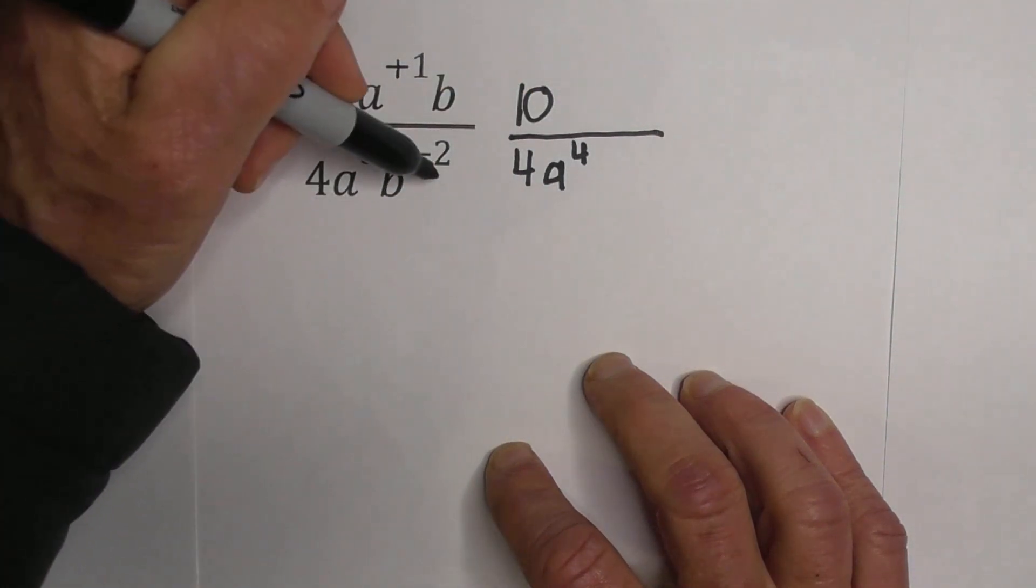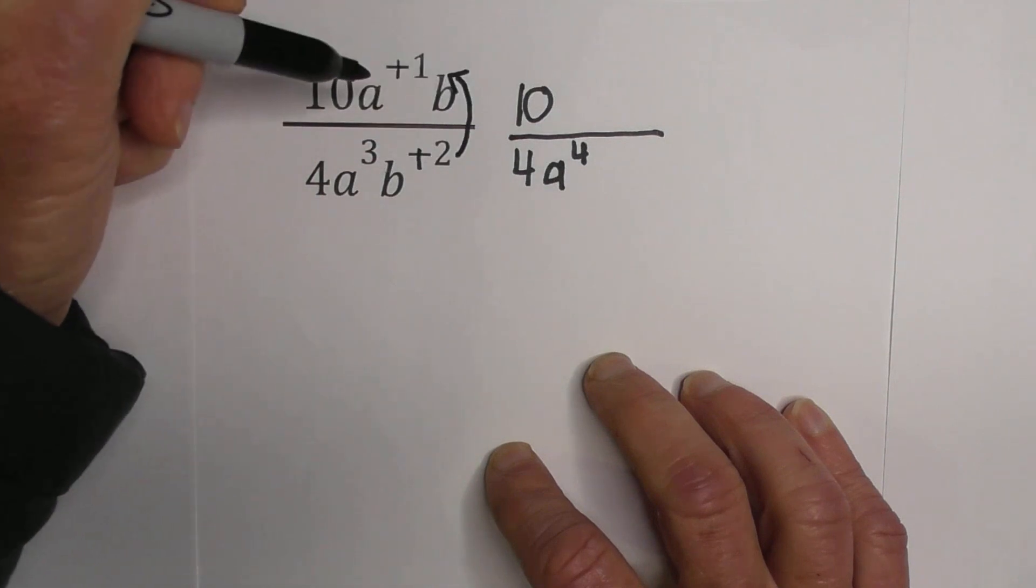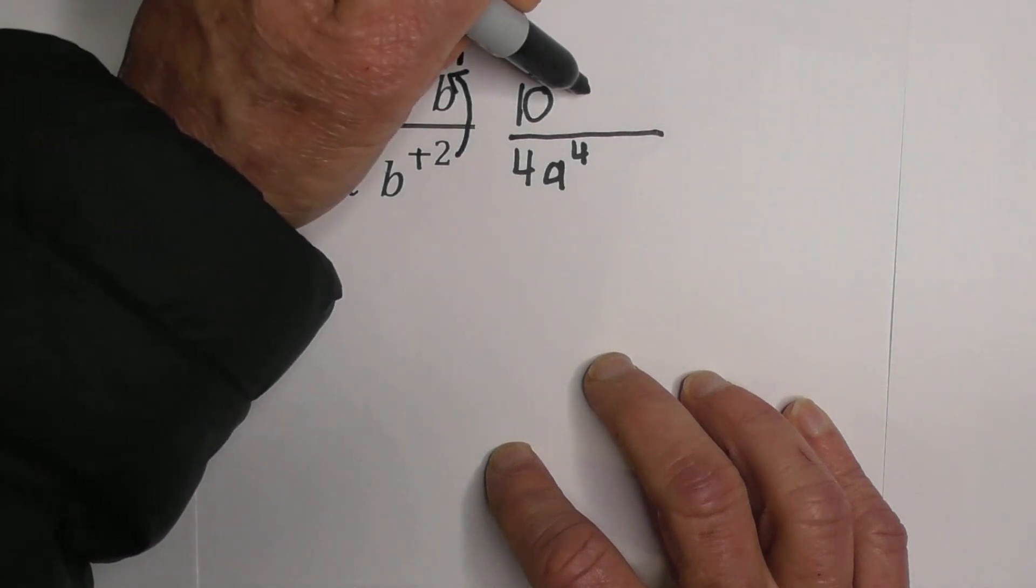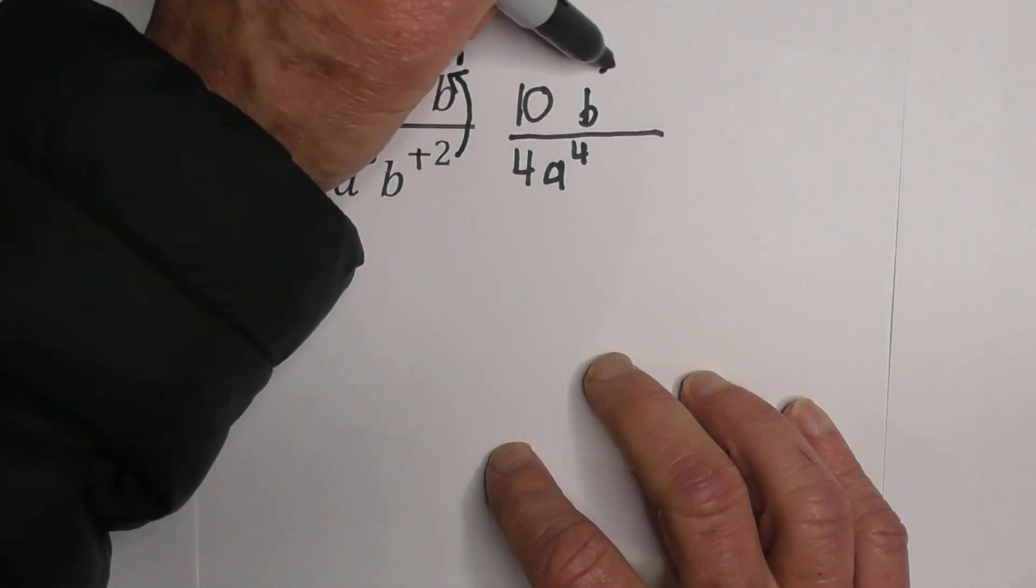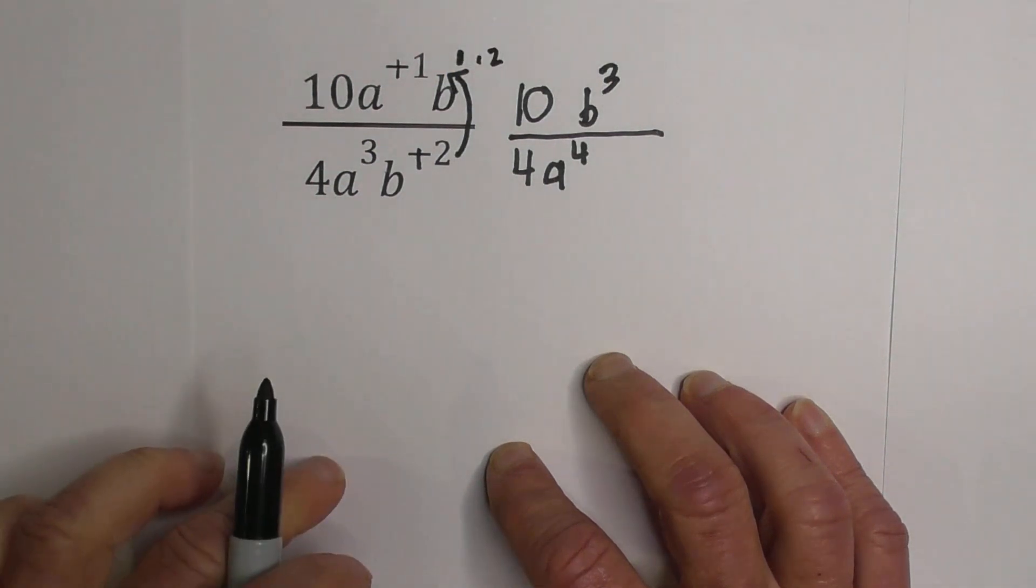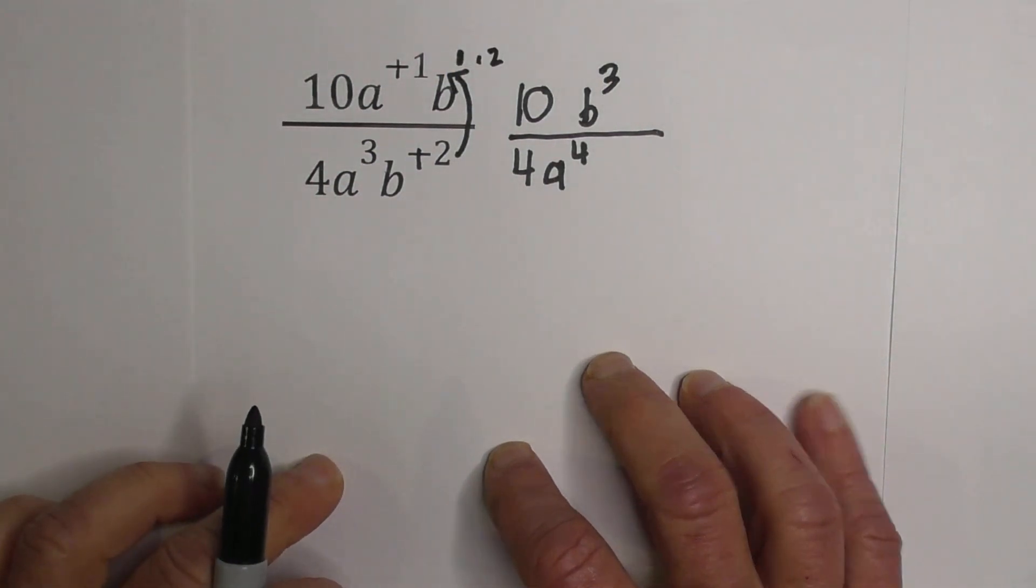And then we're going to move this B. We're going to change the sign and we're going to move it in this direction. So now we have a 1 there for the B, so it's going to become B to the 3rd, because we have 1 plus 2. Now, what can we do from here?